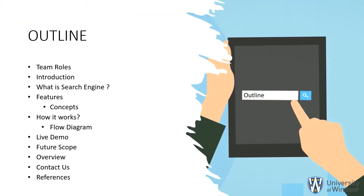Here is the outline of the presentation. First, we are going to discuss the team roles and introduction. Then we are going to explain what the search engine is, what features are used in our system, the concepts utilized in the system, its working and the flow diagram. Then we will present a working demo of our search engine, followed by the feature scope, and finally we will give a brief overview.